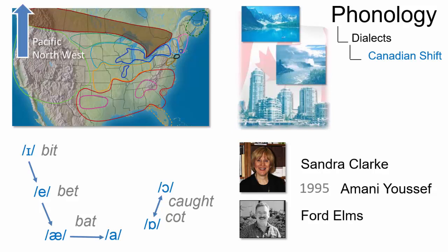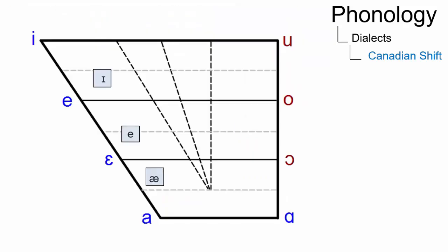The Canadian shift typically affects the front vowels e, e and æ. However, whereas the lowering and retraction of the tongue in short æ is an undisputed feature of the Canadian shift, the lowering of e and e is controversial.